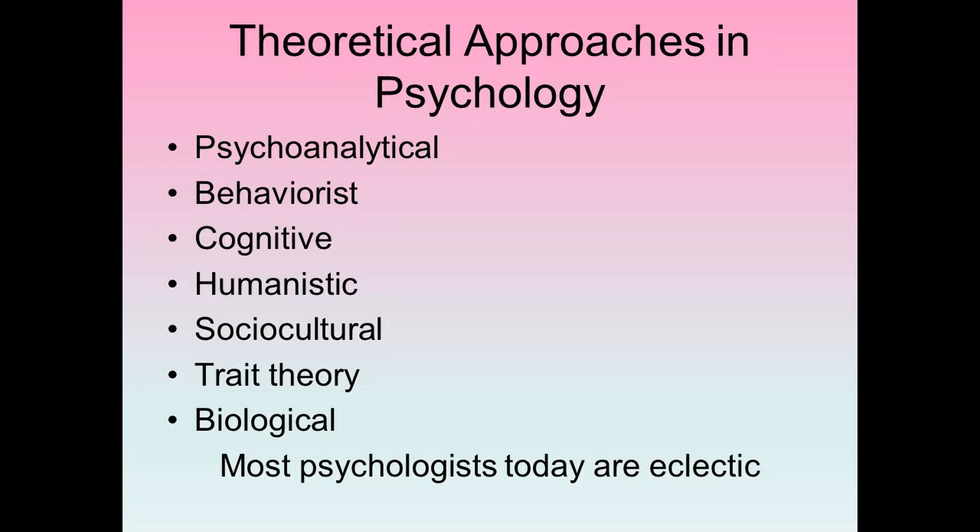We've talked about different psychological approaches to behavior. For instance, we've talked about the psychoanalytical perspective based on Freudian theory — the idea that sexuality is a huge part of personality development. We've talked about the id, the ego, the superego, and stages of psychosexual development. All that is the psychoanalytical approach.